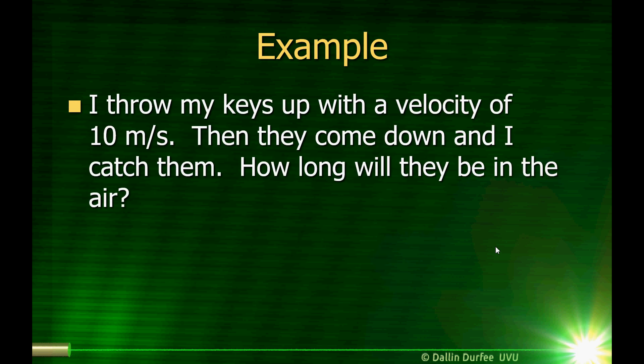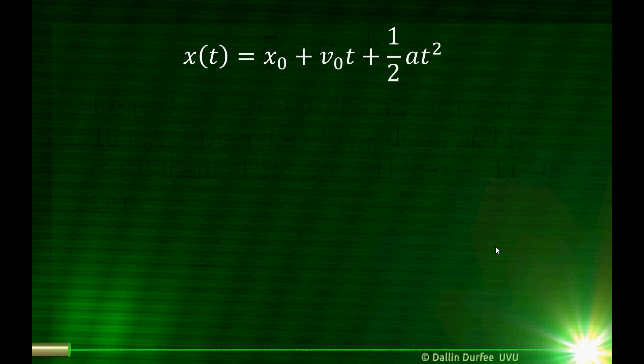So let's do some examples with these equations which we have derived. Here's one: I throw my keys up with a velocity of 10 meters per second. Then they come down, and I catch them. How long will they be in the air? I'm assuming that I let go of them and catch them at the same height. We have this equation: position is the initial position plus v-naught t plus one-half a t-squared.